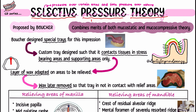Till now we have seen mucostatic and mucocompressive theory, which are like the two extreme points. At one extreme you have your mucostatic theory and on the other end you have mucocompressive theory. In mucostatic theory the impression is recorded with the mucosa at rest, while mucocompressive theory involves applying definite pressure all around the mucosa. Both theories have their own merits and demerits, so they came up with something in between these two extreme points.